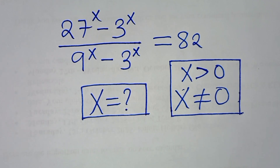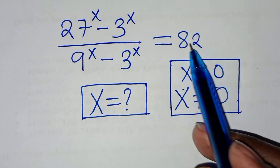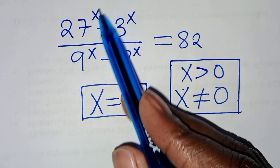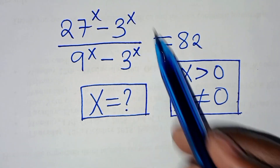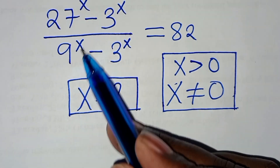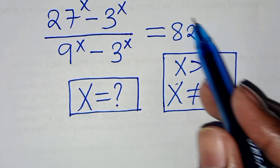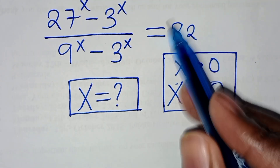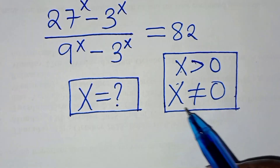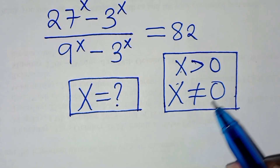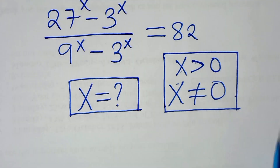Hello everyone, you are welcome to solve this nice algebra problem, which is: 27 to the power of x minus 3 to the power of x, divided by 9 to the power of x minus 3 to the power of x, equals 82, given that x is greater than 0 and x is not equal to 0. So what is the value of x?